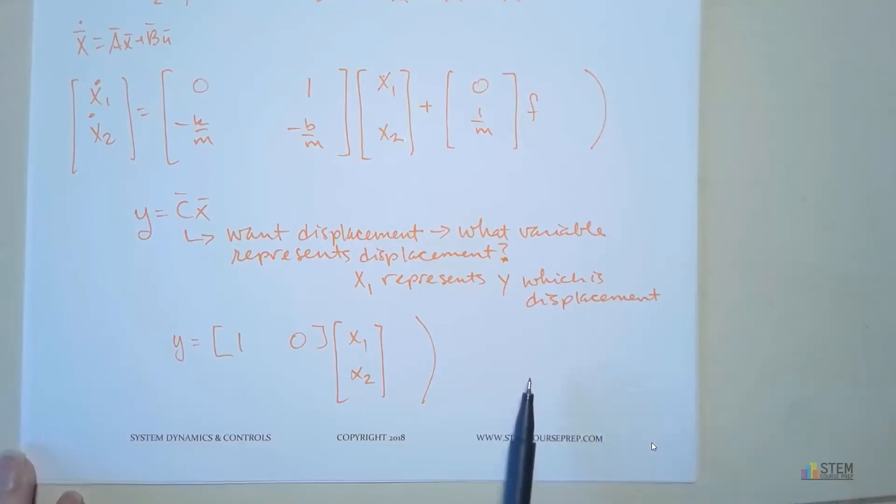Now, if we wanted velocity of that mass, if we wanted to output that, instead of this c, we would have 0 and 1. And that would be because velocity is represented by x2. So we want to get x2 out, so multiply the 1 by x2, that gives you the velocity. Alright, let's stop on that one, and then we'll pick it up with another example in the next video.